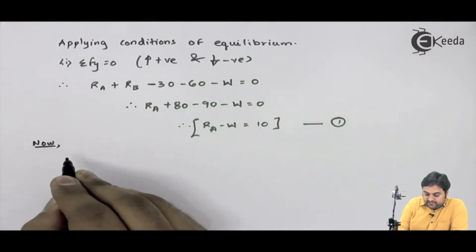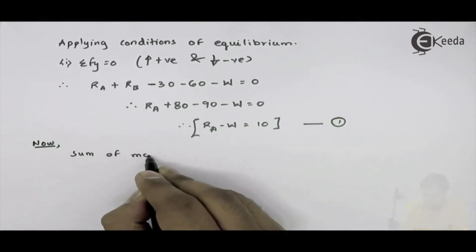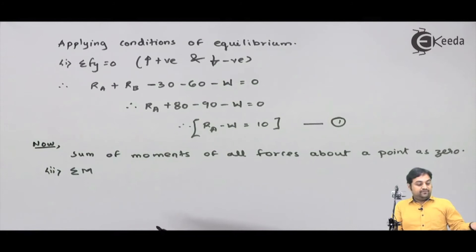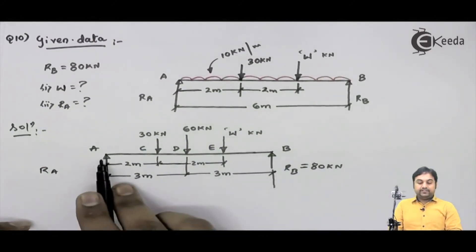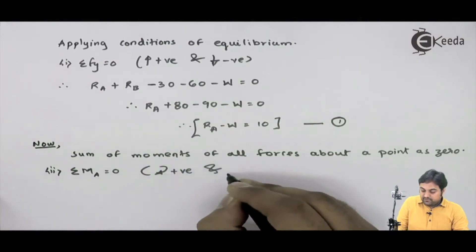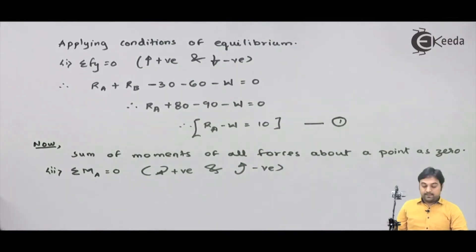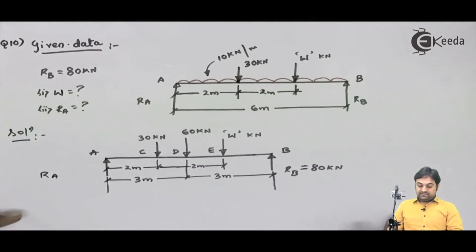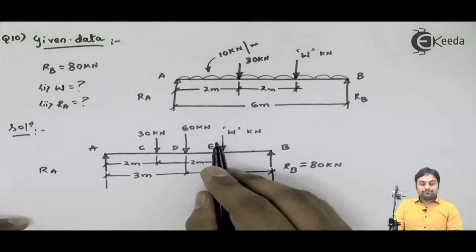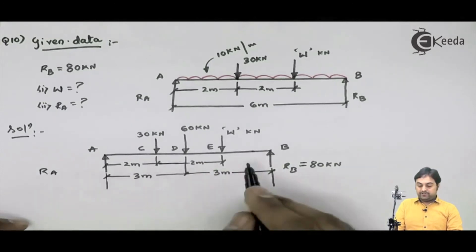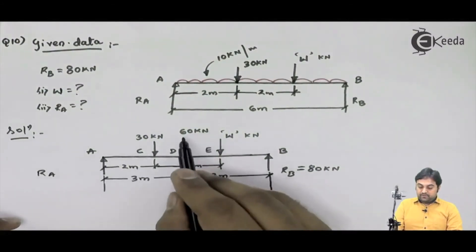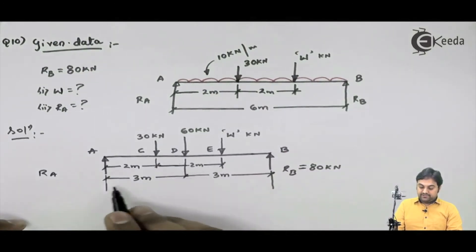Now I will apply the second condition of equilibrium — I will take the sum of moments. Since I have the RB value as 80, I will take moments at point A. Summation of moments about A equals 0, where clockwise moments are positive and anticlockwise moments are negative. Since RB acts upward at B, it gives minus RB into 6. W is acting downward, so its moment about A is clockwise: plus w into 4. The 60 kilonewton load acts at 3 meters, so plus 60 into 3.